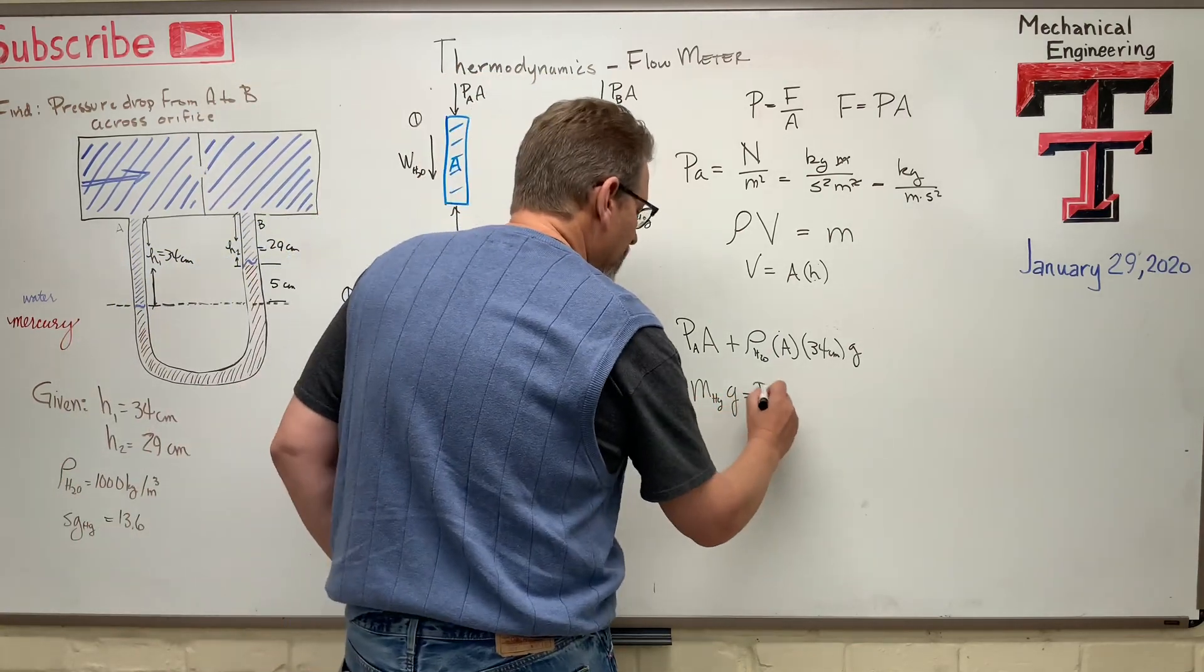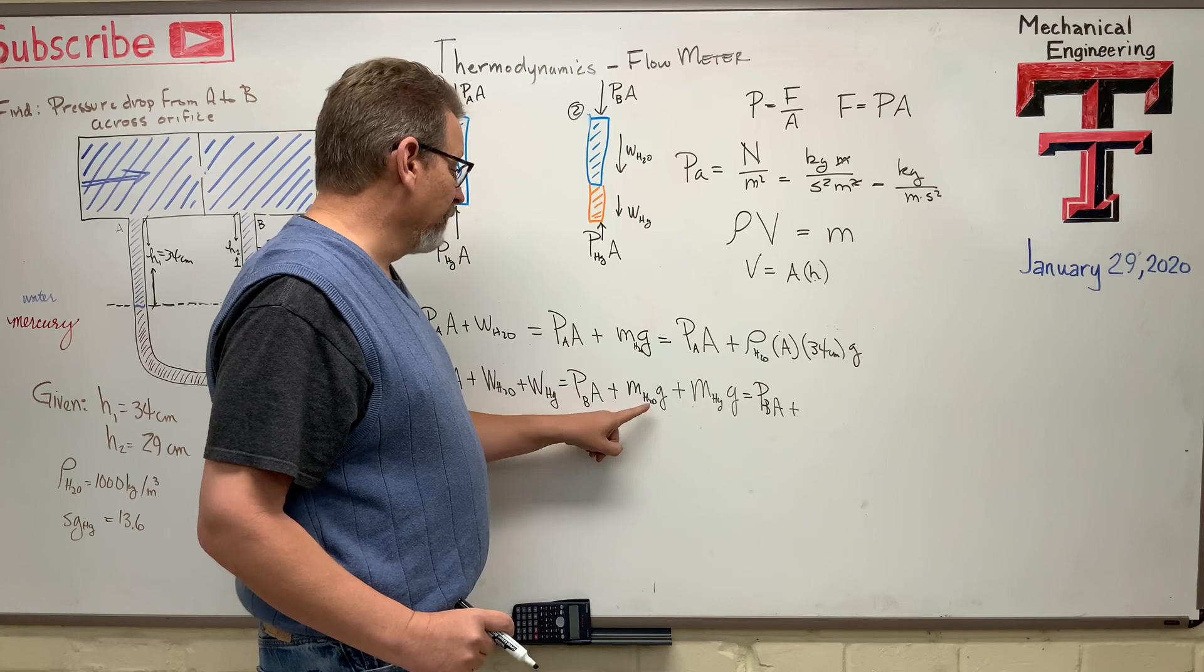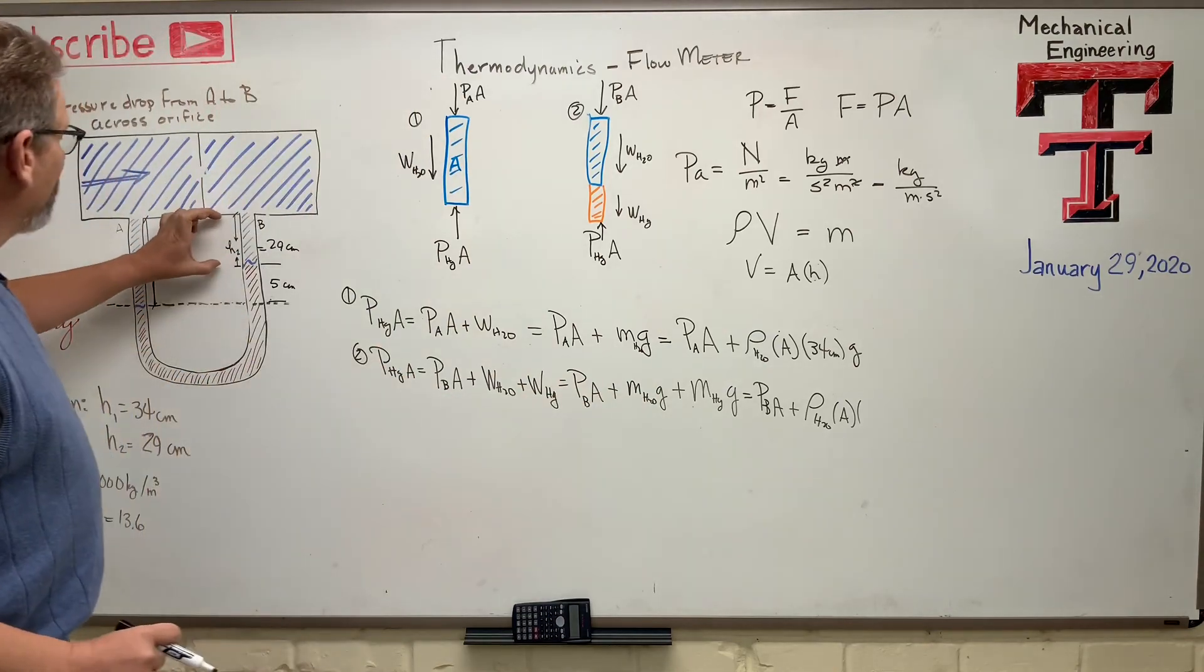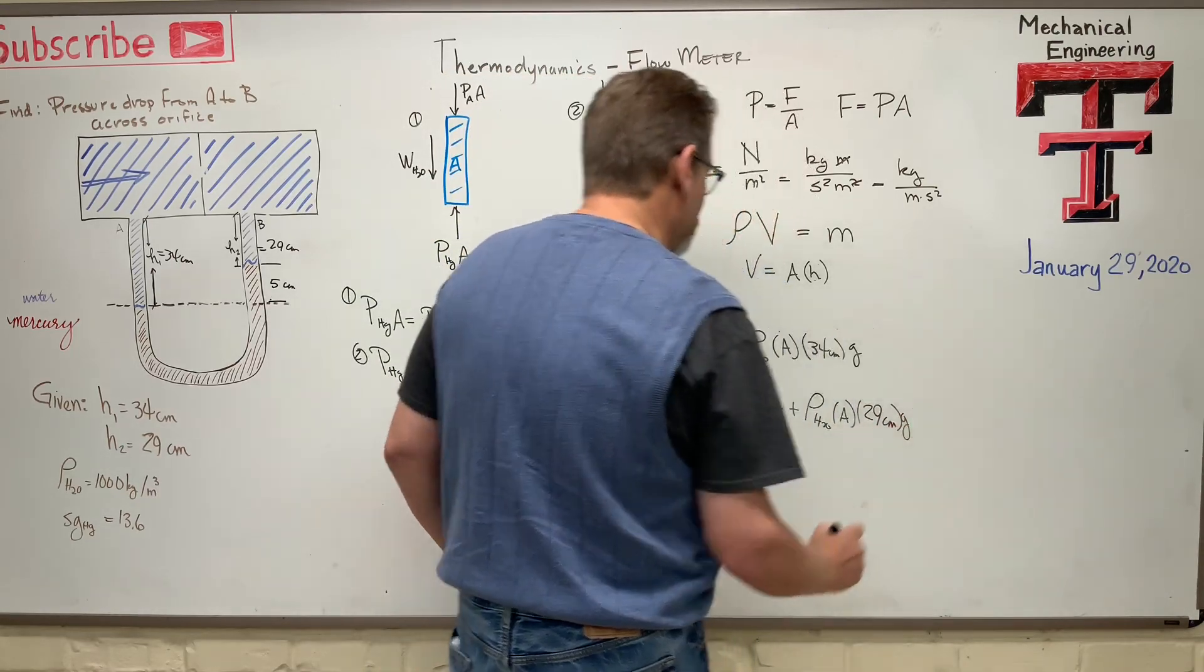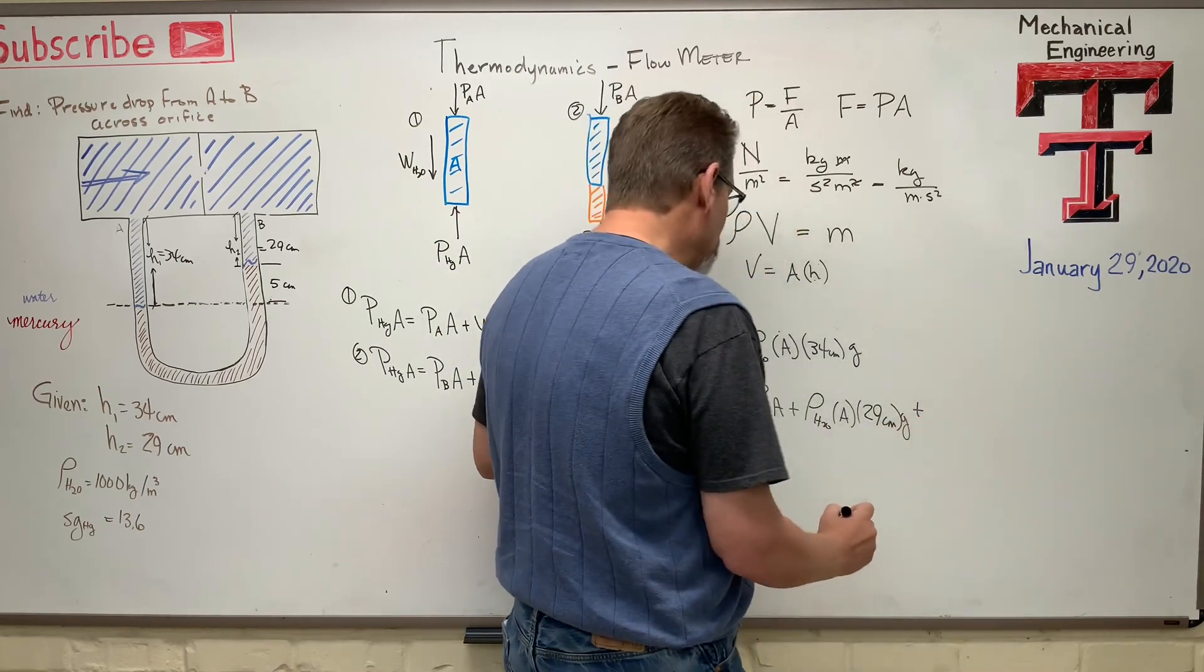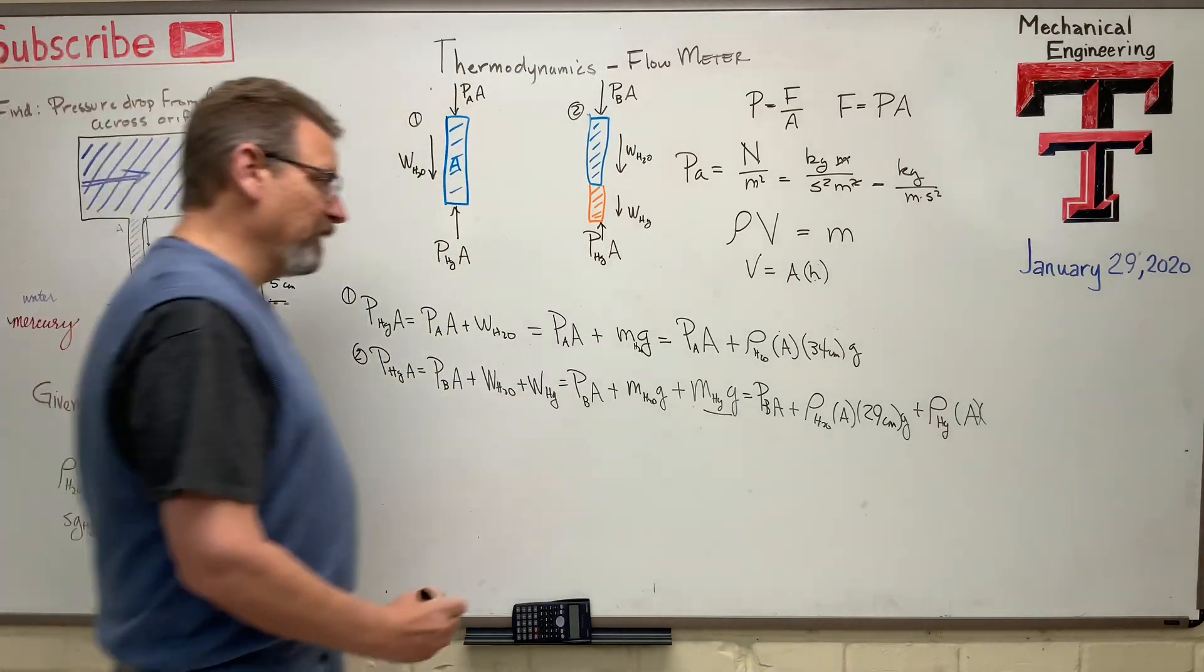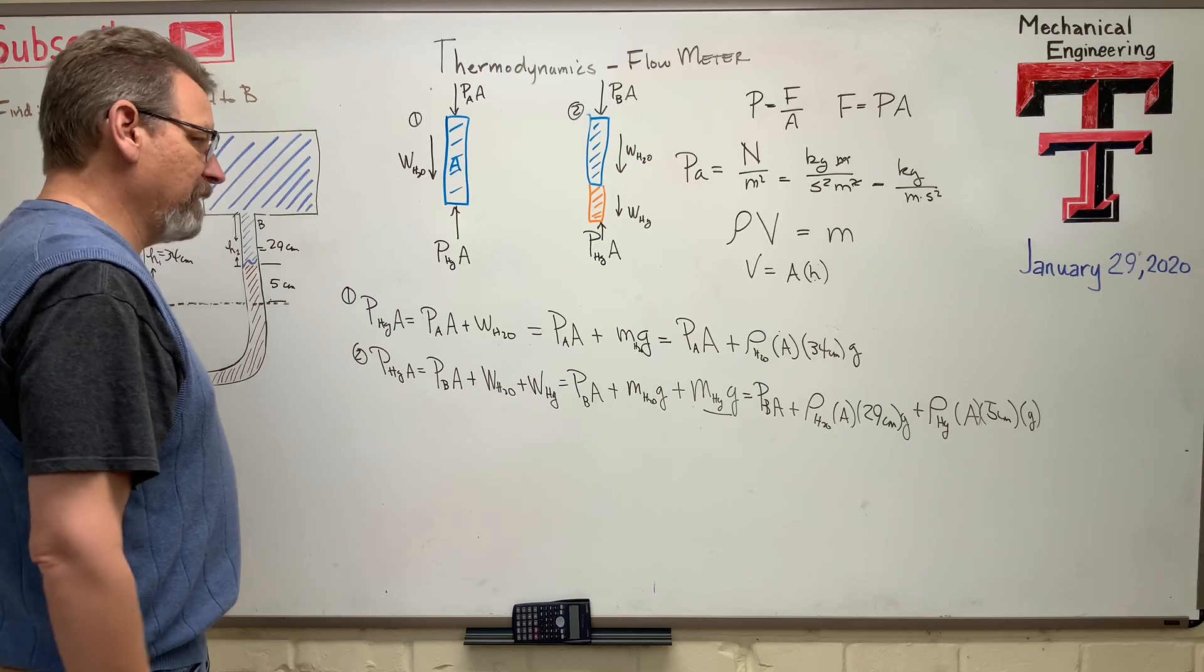One more time. Here we go. P_B times A plus. It's really easy to leave one of these terms out, so be super careful. So MG for water is going to be the same as this guy, so rho_H2O times A times, now what's the height of the water in system number two? The height of the water in system number two is 29, 29 centimeters times G, plus we got to do this guy, we got to do that guy, which is the mercury part, so plus, here we go, rho_HG times A times the height of the mercury, that's five centimeters, we know that, five centimeters times G.